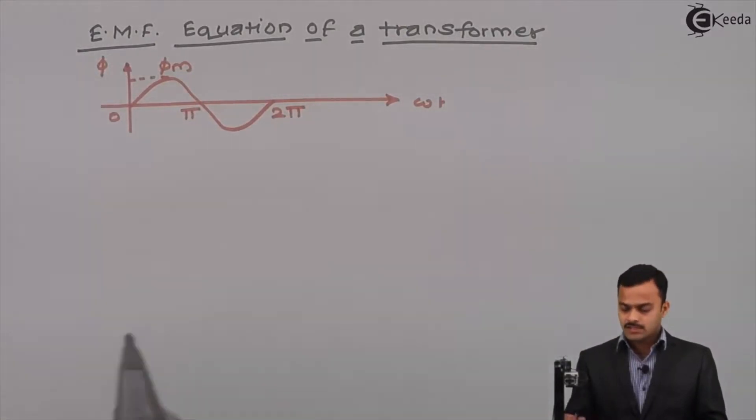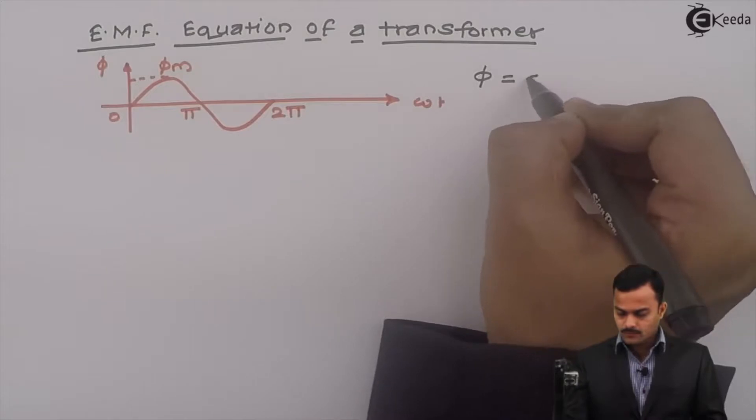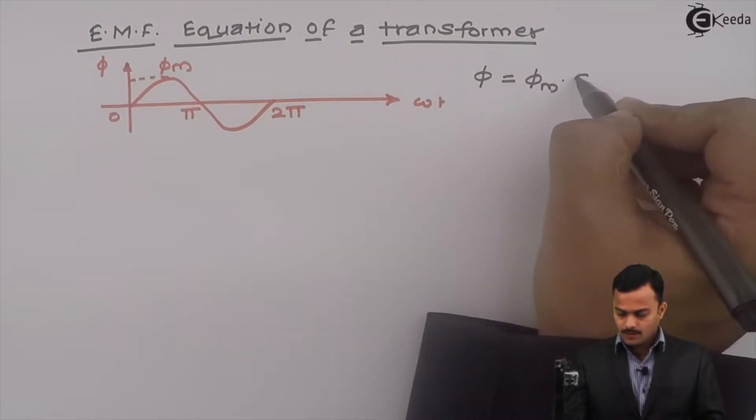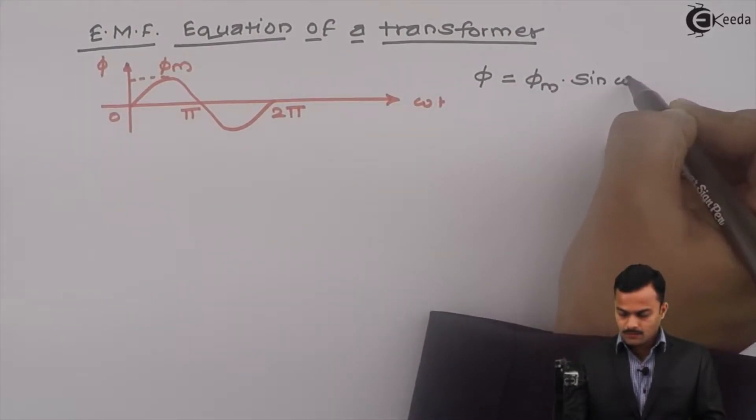The equation of this waveform is phi equal to phi m sine omega t.